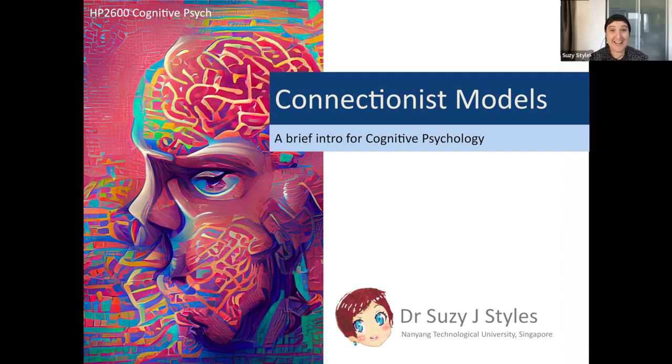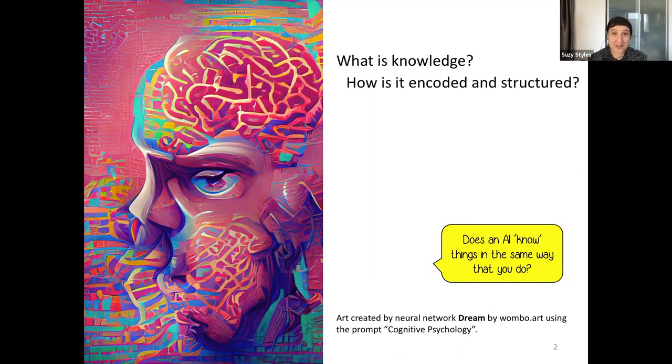This is Cognitive Psychology, and this is our brief supplement on Connectionist Modeling to go along with our content on categories and category knowledge. We've been talking about human knowledge structures quite a bit in class so far, but for this little module, we'll be thinking about whether there are simulations of human knowledge structures that we can make outside of ourselves.